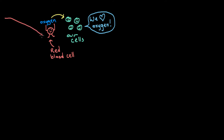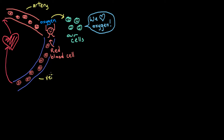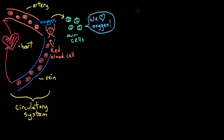Red blood cells get around our body by way of our circulatory system, which is made up of our arteries, our veins, and our heart. So now that we know the basic components of our circulatory system and why they're so important — to circulate blood around our bodies so we can stay alive — I just want to focus for now on the main artery in our body, called the aorta.